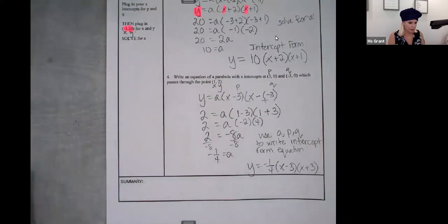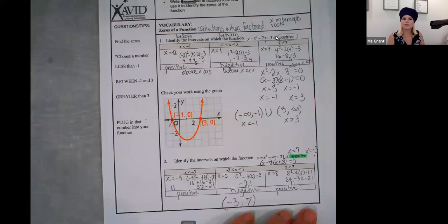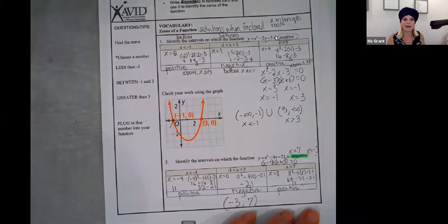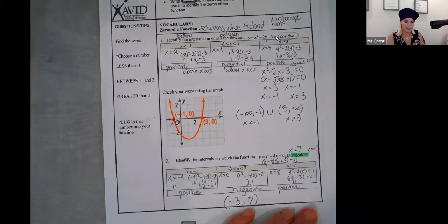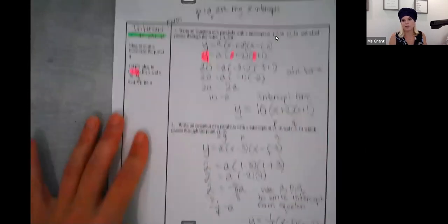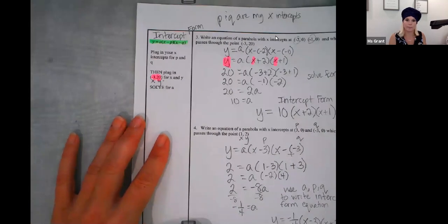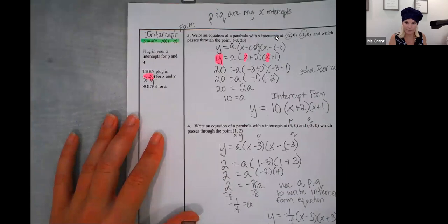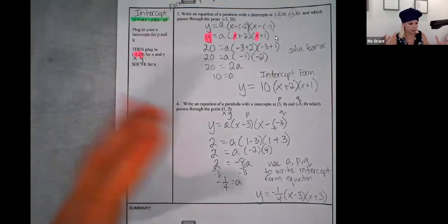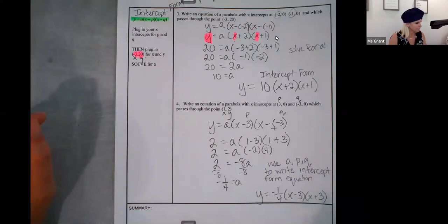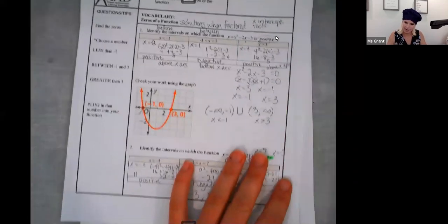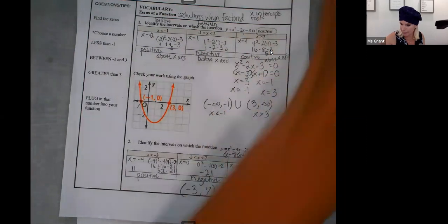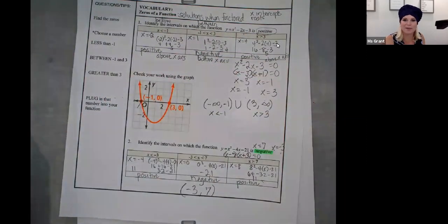Recap: we figured out where a function is positive and where it is negative — over what intervals. Then we learned something new about intercept form. It's a new way — if I'm only given the x-intercepts and a point on the parabola, I can figure out the equation of the parabola using intercept form. All different ways to figure out the equation of a parabola. You'll watch this video and take notes, and then in class we're going to do the additional practice. I'll see you guys in class tomorrow. Bye!